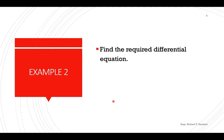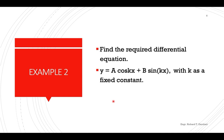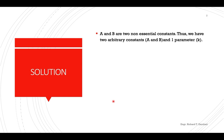Let's have another example: find the required differential equation for y equals a cosine(kx) plus b sine(kx), given that k is a fixed constant. Here a and b are two non-essential constants, so we have two arbitrary constants — namely a and b — and one parameter k. Therefore, we should obtain a second-order differential equation.